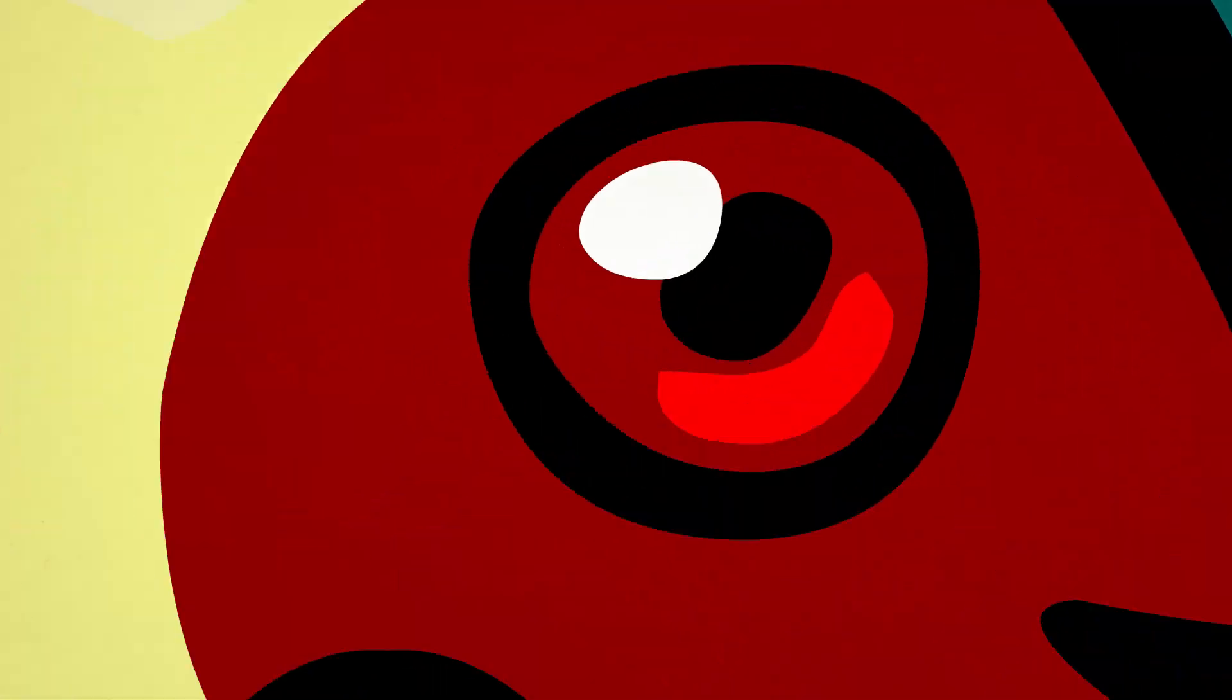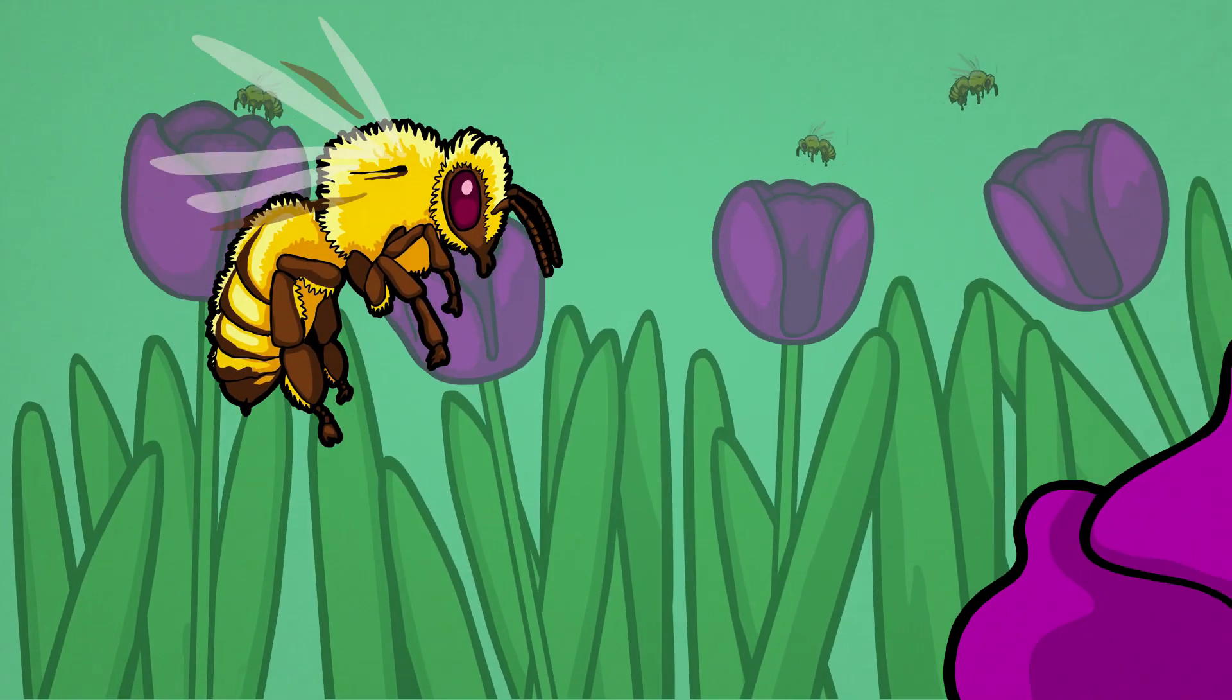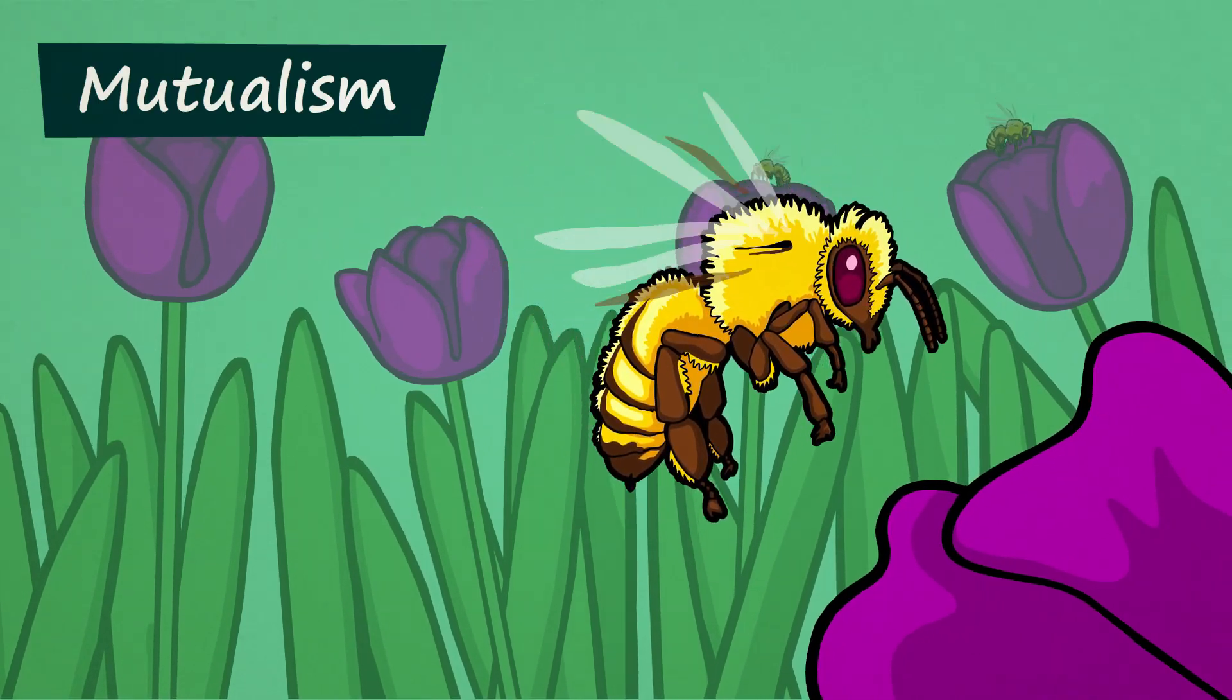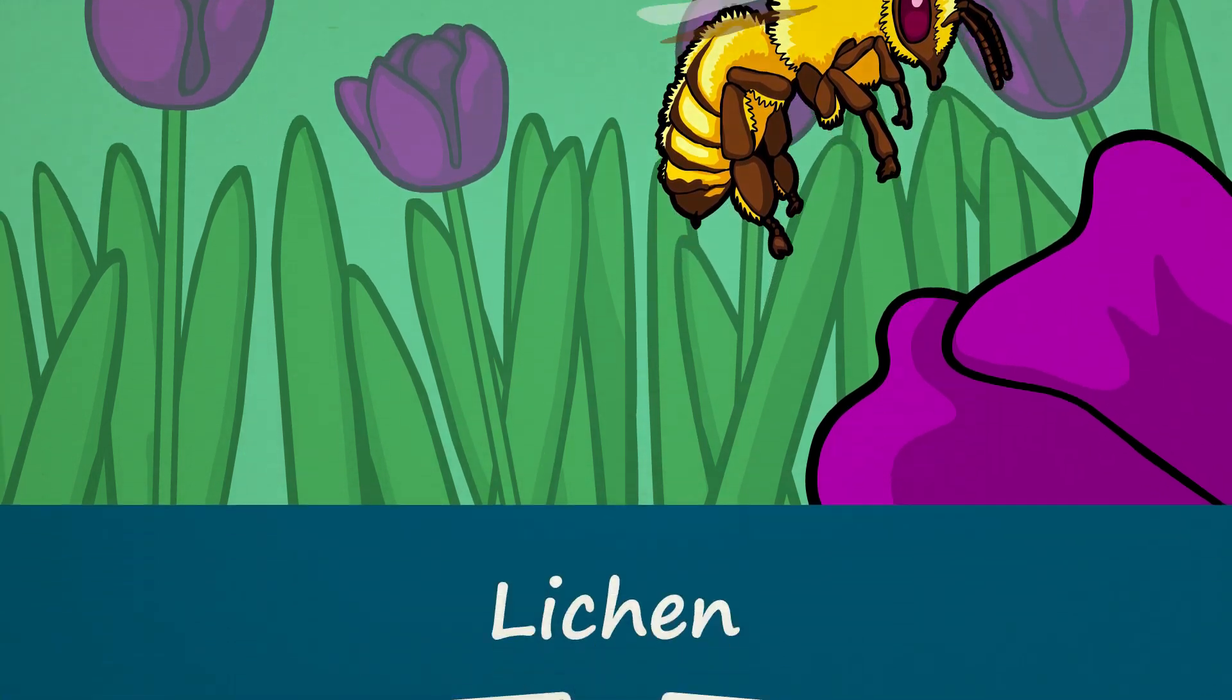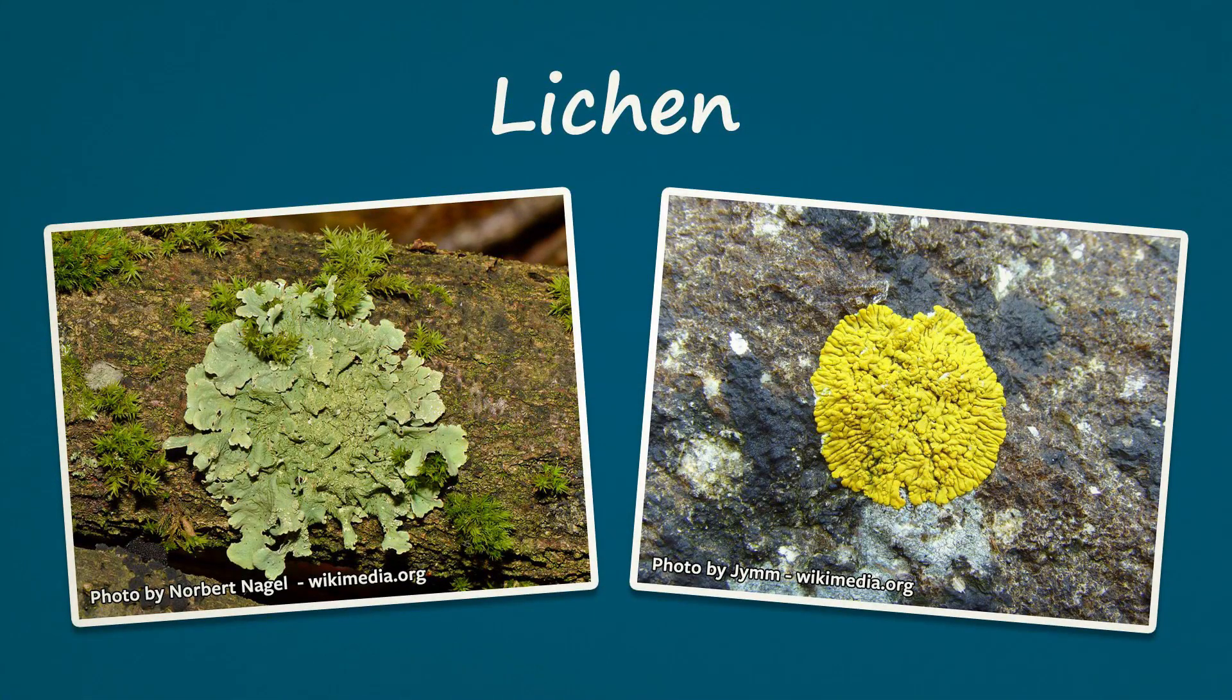When two or more different species cooperate to make a living, scientists call it mutualism. One of the craziest examples of mutualism can be found in lichen, those crusty things you'll often find growing on rocks and tree bark.